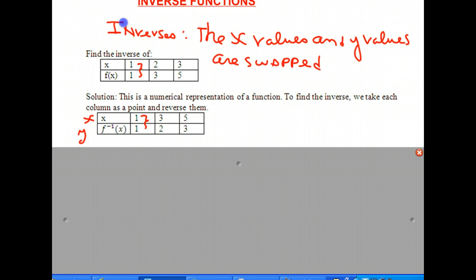In the original function, when x is 2, y is 3. But in its inverse, when x is 3, y is 2. Notice how we swapped the x and y values.